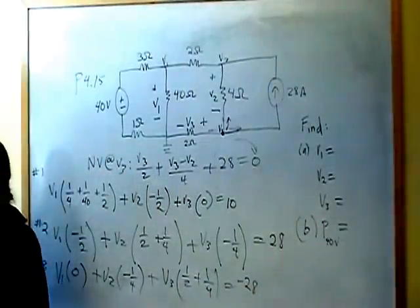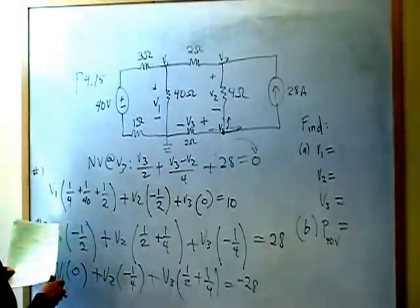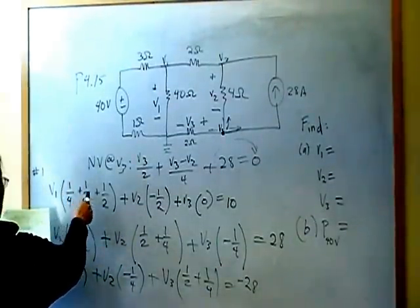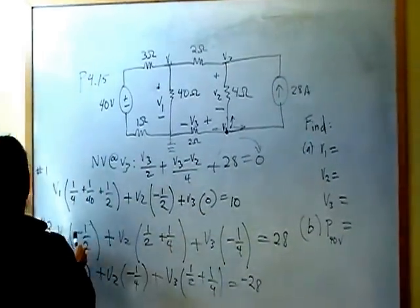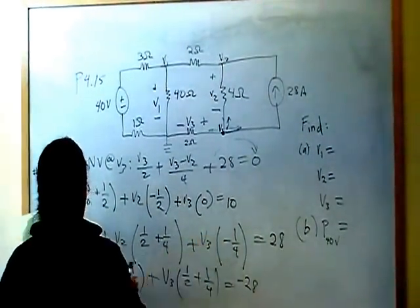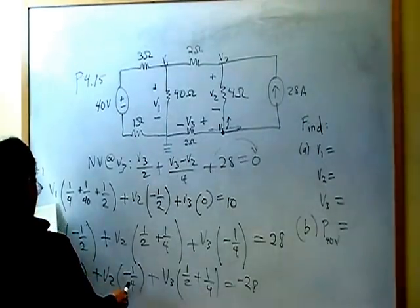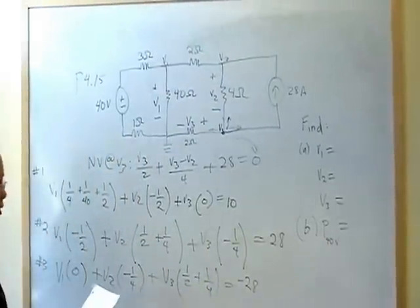And I want to check, make sure I did not make mistakes. One fourth, one 40, one half, negative one half, zero, 10, negative one half, one half, one fourth, negative one fourth, 28. Four, negative one fourth, one half, one fourth, 28, negative 28. Okay. When you do that, you should come up with V1 is equal to 60.